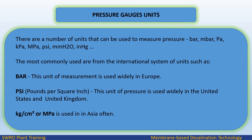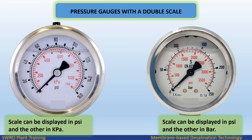Pressure gauge units: There are a number of units that can be used to measure pressure — bar, Pa, kPa, MPa, psi, mmH₂O, and mmHg. The most commonly used are from the International System of Units, such as bar, which is widely used in Europe. PSI (pounds per square inch) is widely used in the United States and United Kingdom. kg/cm² or MPa is commonly used in Asia. Pressure gauges with a double scale can display psi and kPa, or psi and bar.